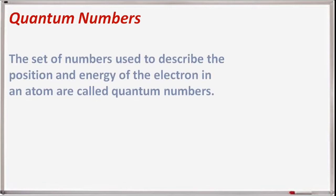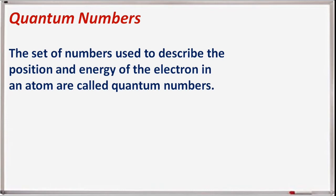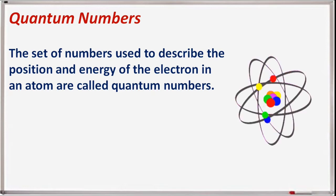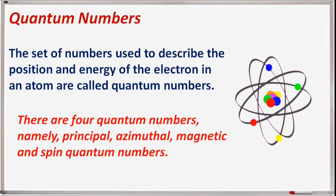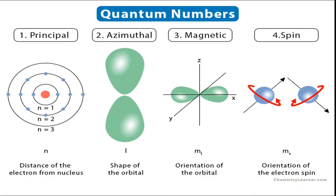Quantum numbers are the set of numbers used to describe the position and energy of the electron in an atom. There are four quantum numbers: principal, azimuthal, magnetic, and spin quantum numbers. The principal quantum number relates to the distance of the electron from the nucleus; azimuthal to the shape of the orbitals; magnetic to the orientation of the orbital; and spin to the orientation of the electron spin.